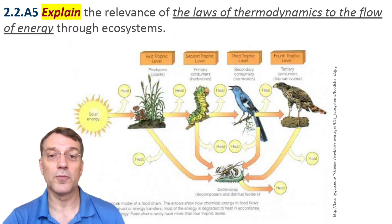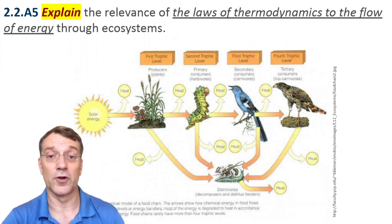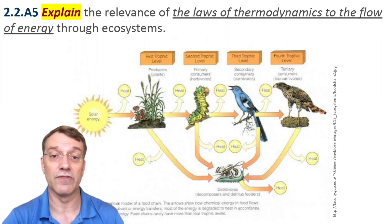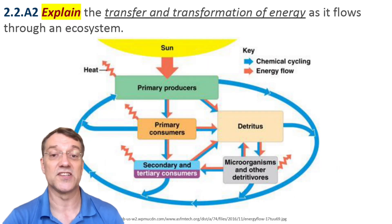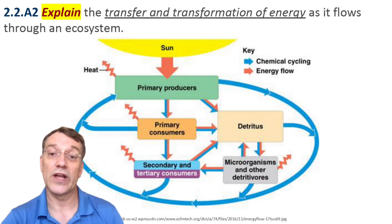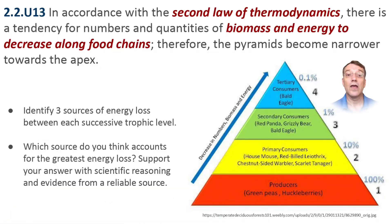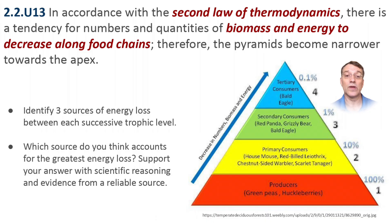The laws of thermodynamics govern energy flow in ecosystems. The first law — conservation of energy — explains why energy is neither created nor destroyed, but transformed as it moves through food chains. The second law — the law of increasing entropy — explains why energy becomes less available with each transfer, because much of that energy is lost as heat.